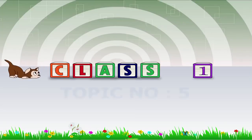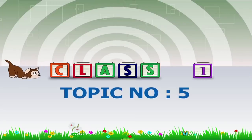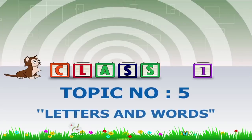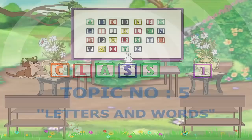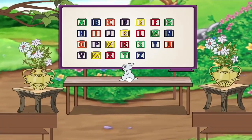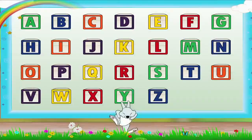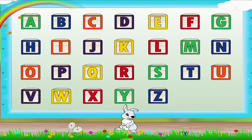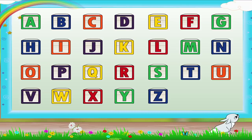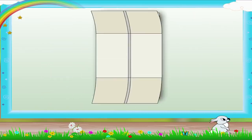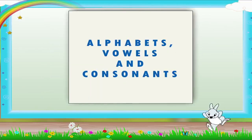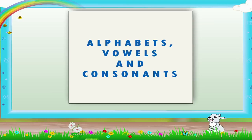Last one. Topic 5: Letters and Words. Hey Rainbow, are you looking at the alphabets? I am sure you remember the alphabets, the vowels and consonants.